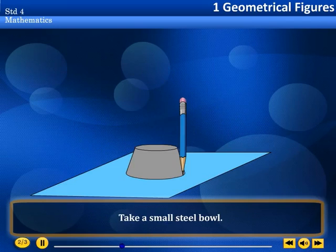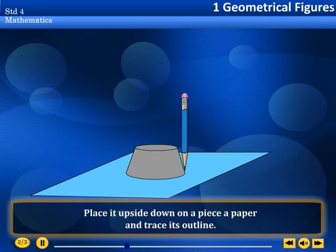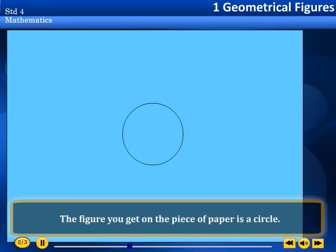Take a small steel ball. Place it upside down on a piece of paper and trace its outline. Remove the ball. The figure you get on the piece of paper is a circle.